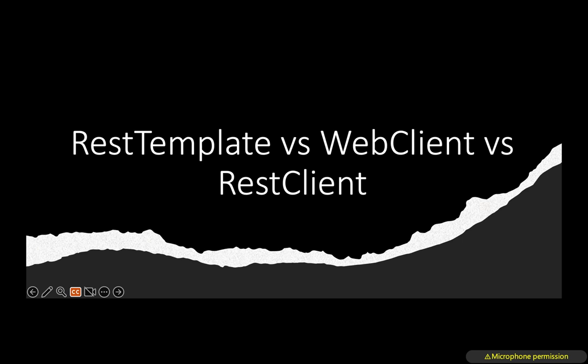So first, let's talk about the differences between the RestTemplate and WebClient. Basically, the RestTemplate — if you want to make any synchronous calls, say you have an API and you want to make an API call and get the response — we can use RestTemplate. It could be RestTemplate dot getForObject, getForEntity, or any exchange operation to get the response from another API.